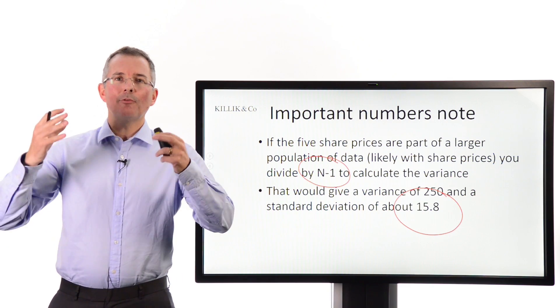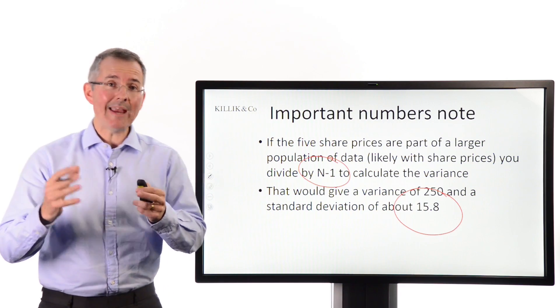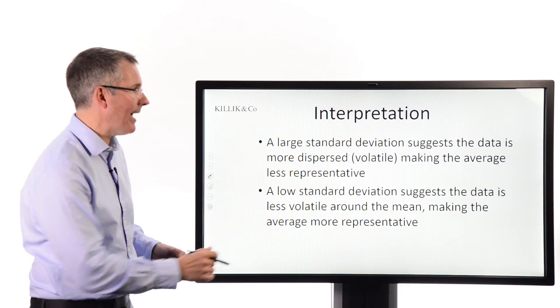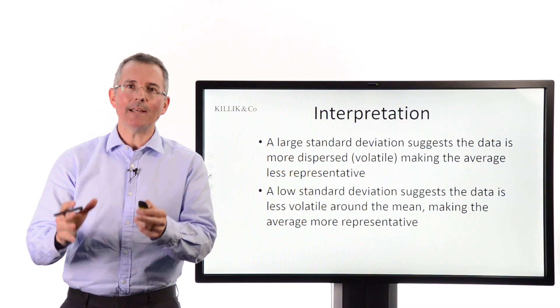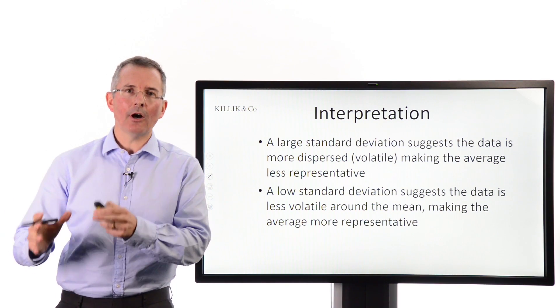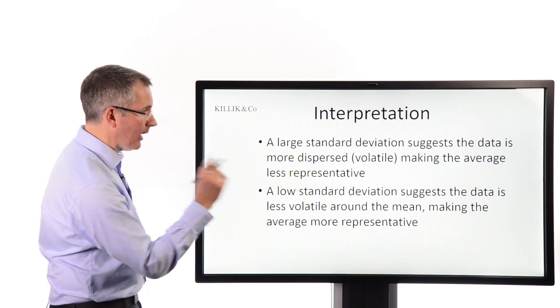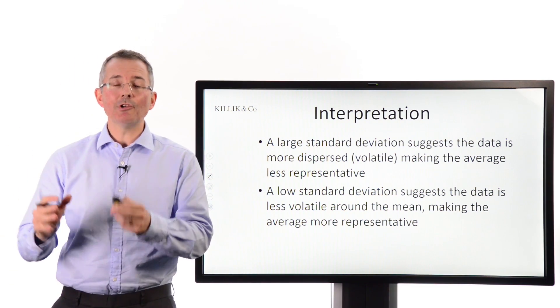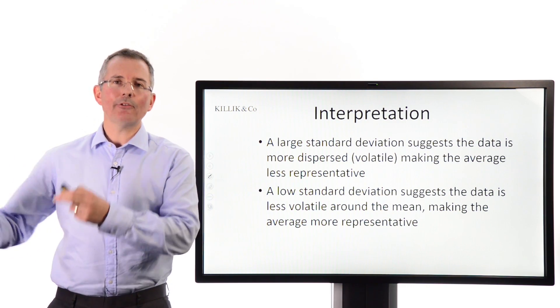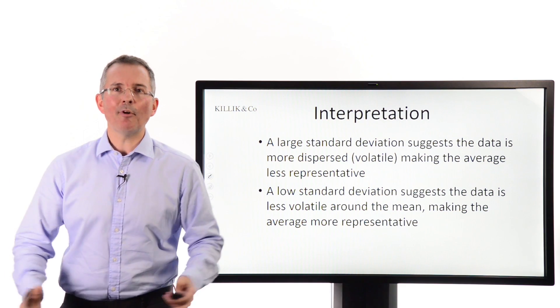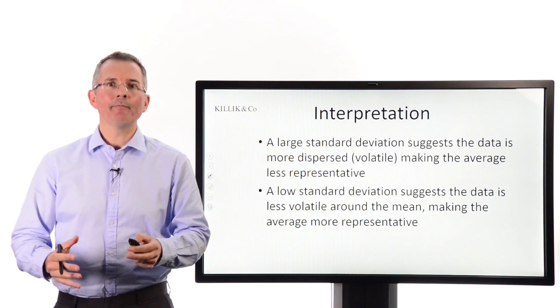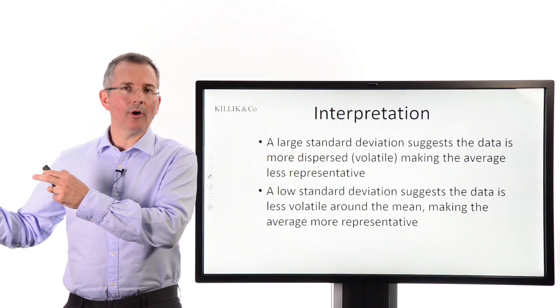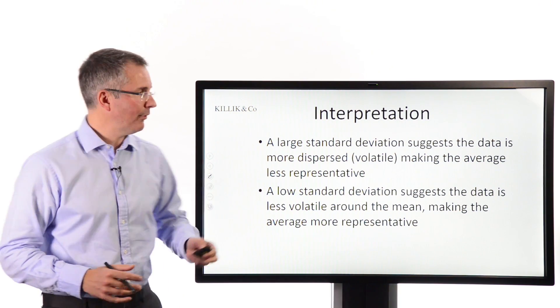Now, so what? Most people would be thinking, well, I'm never going to have to do this myself. I would hope someone else might do it for me. So what am I going to take away from this? Well, here's the point. A large standard deviation relative to the mean, for an important caveat there, means the data is more dispersed. And that makes the mean less reliable as a guide to what might happen next. That's the key point we're trying to get to. Whereas a low standard deviation suggests less volatility around the average, and therefore a more reliable average number. You can take more confidence, if you like, in the average as a way of forecasting what might happen next. So, for example, if you're looking at something like performance over time of, say, a fund. A low standard deviation suggests that the average performance you've just looked at might be some sort of reliable guide to what could happen next. And that's where this starts to get more useful.